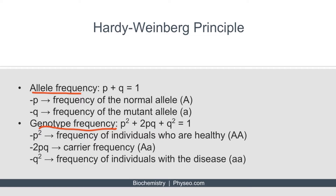The Hardy-Weinberg Principle can be used to determine the allele frequency and the genotype frequency. For a gene that has only two alleles, P plus Q equals one. This is because we're assuming that there are only two alleles in the population; therefore, all individuals will either have a big A or a little a, and the total percentage will equal one, or 100%. P refers to the frequency of the normal allele, denoted by big A, whereas Q refers to the frequency of the mutant allele, denoted by little a.